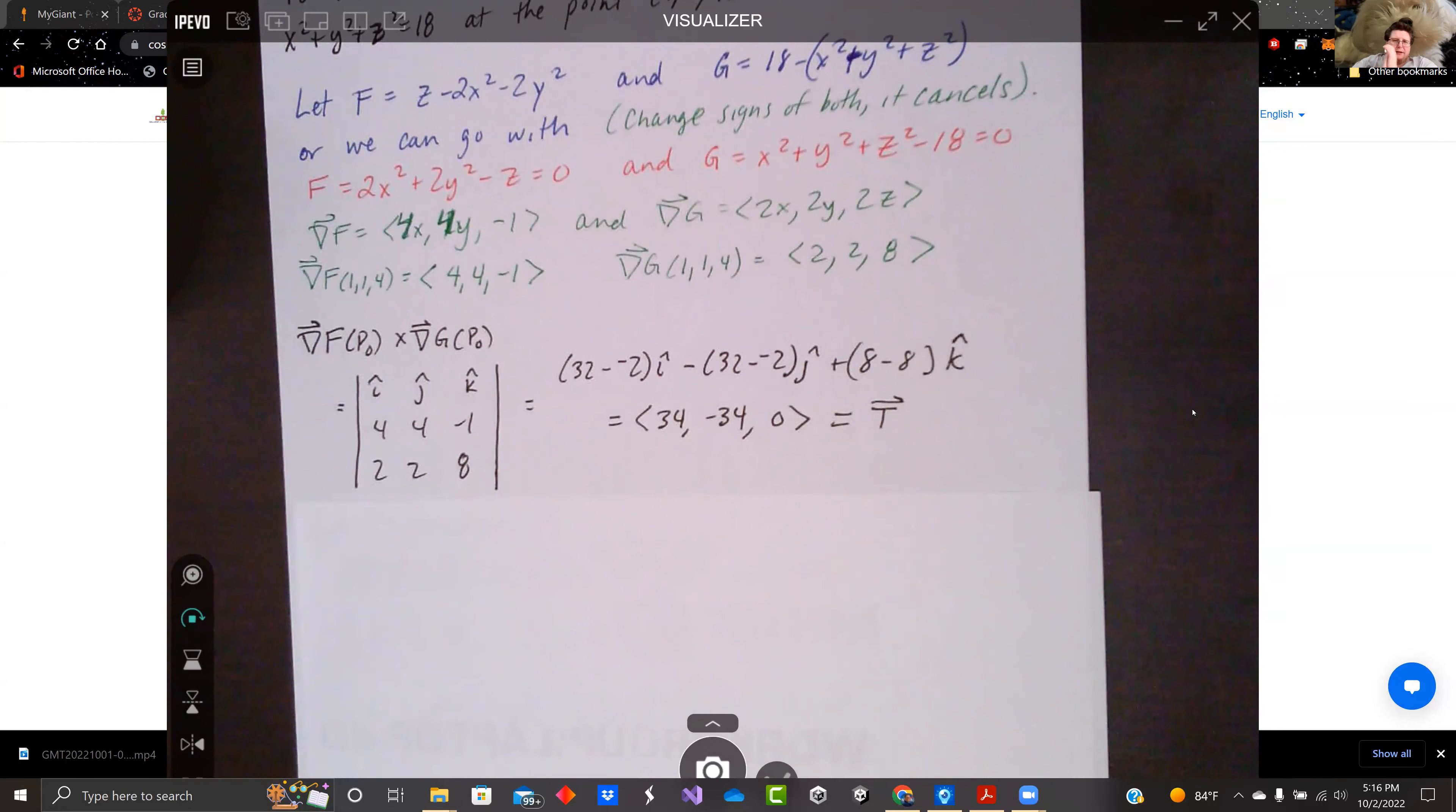We take a cross product of these, and we got crossing 4, 4, negative one, and 2, 2, 8. We end up with 34, negative 34, zero.